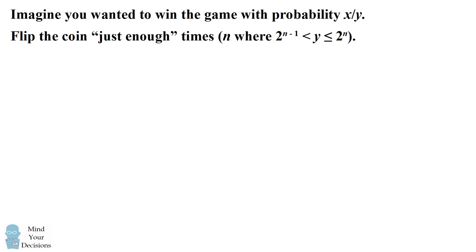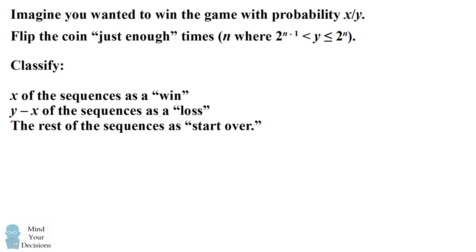We can generalize this procedure. Imagine you wanted to win a game with probability x over y. You would need to flip the coin just enough times so that you get to a value that's more than y. We can then classify x of the sequences as a win, y minus x of the sequences as a loss, and then classify the rest of the sequences as starting over — just disregard them and start over according to the same rules. You will win this game with the probability of x over y.